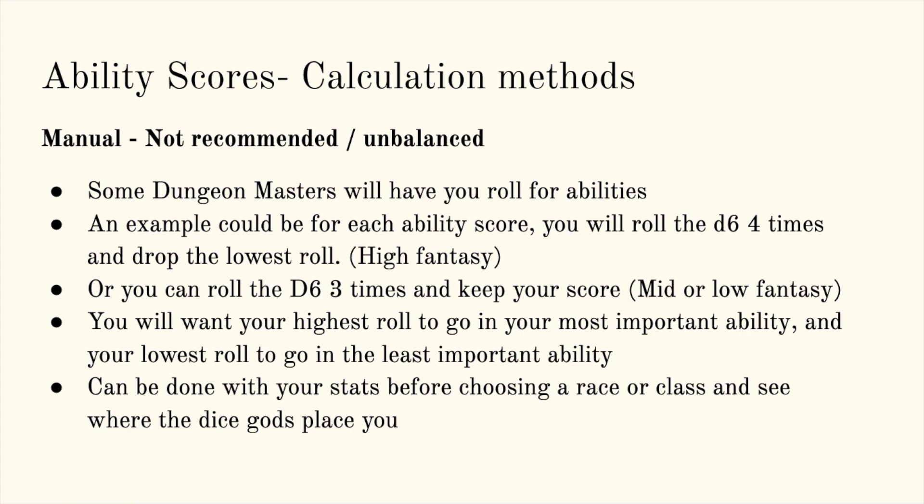In high fantasy, you can roll the d6 four times and drop the lowest roll. For mid or low fantasy, you can roll the d6 three times and keep your score. You'll want your highest roll to go to your most important ability and your lowest roll to go to the least important. A more interesting way to think about it is you could roll stats before choosing a race or class and see where the dice gods lead you — if you roll very high for charisma, you might look at picking a charismatic character. That's just one method of calculating ability scores, although I always stick with standard array as it's the simplest and most balanced.